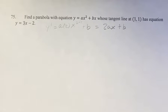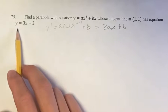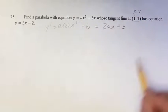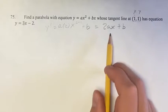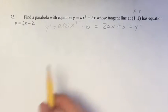So we know that when x is equal to 1, the value of the derivative 2ax plus b is equal to 3, since that's the slope of the tangent line.